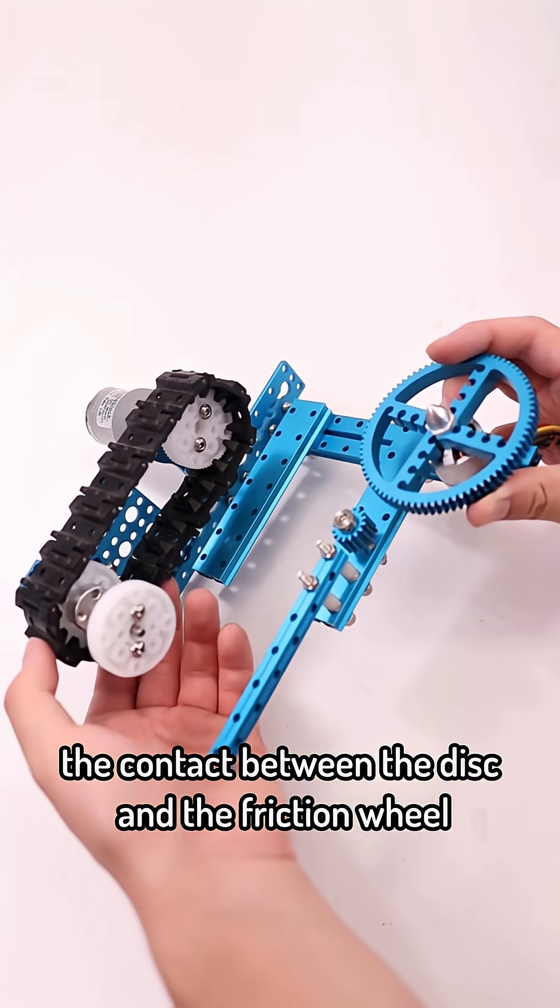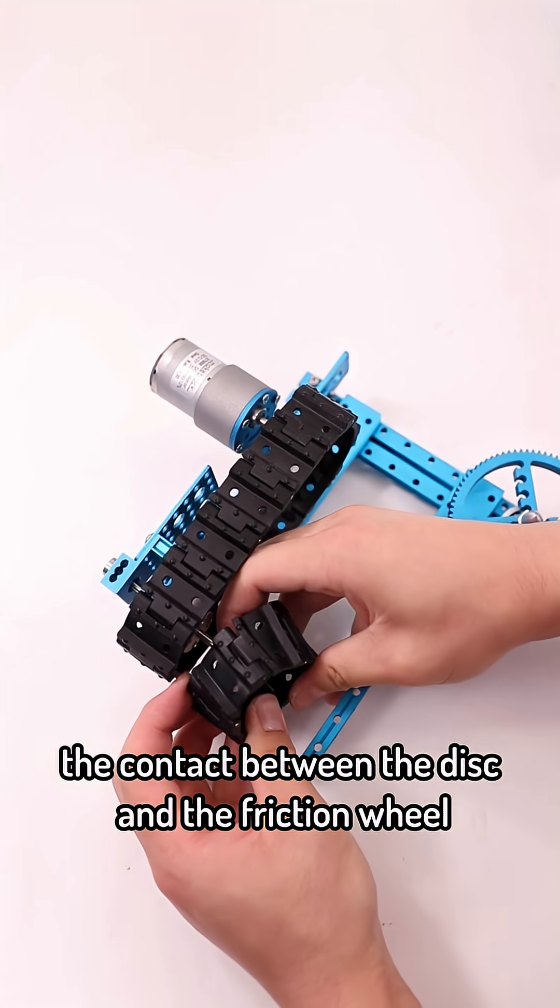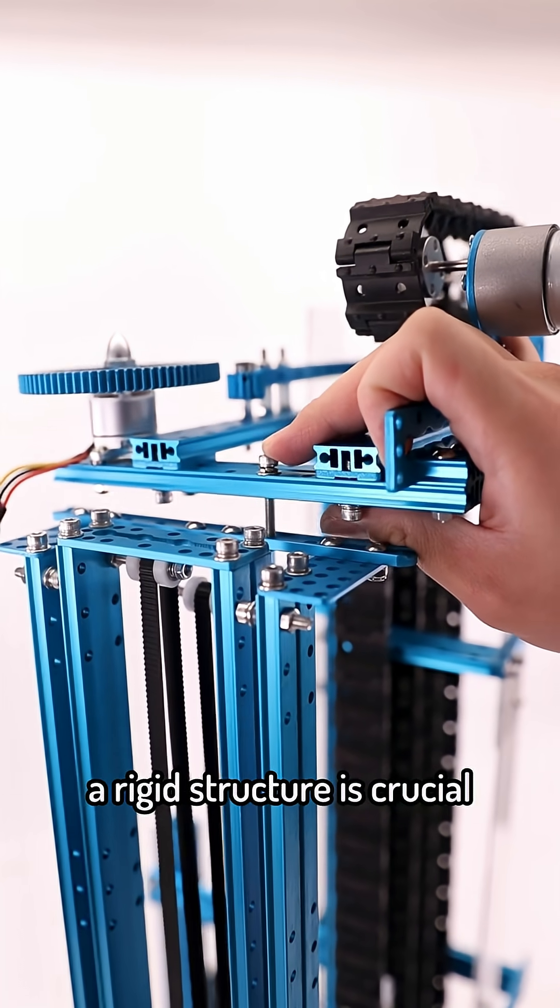To achieve consistent launching, the contact between the disc and the friction wheel must be reliable. A rigid structure is crucial.